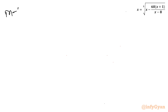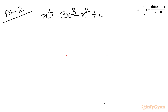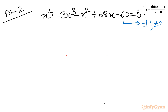Method 2. I will start directly with our quartic equation: x⁴ minus 8x³ minus x² plus 68x plus 60 = 0. I will use the synthetic division method and rational root theorem. The eligible factors of 60 include ±1, ±2, ±3, ±4, ±5, ±6, and so on.